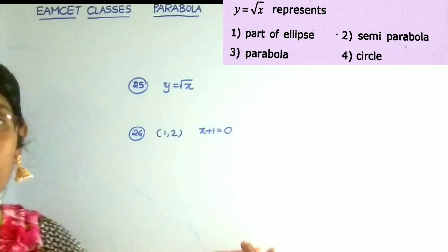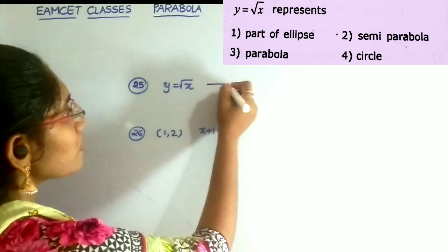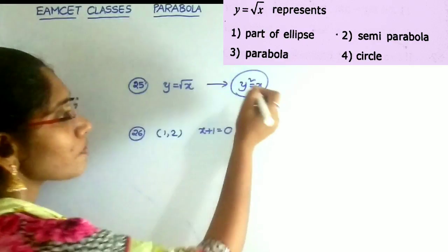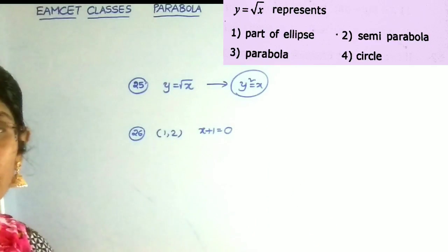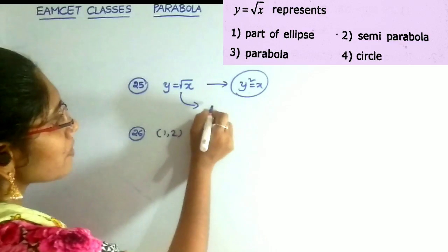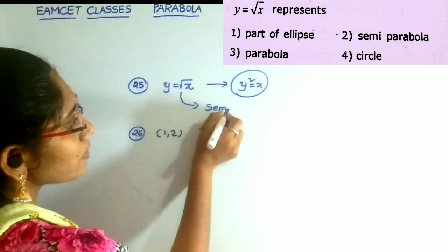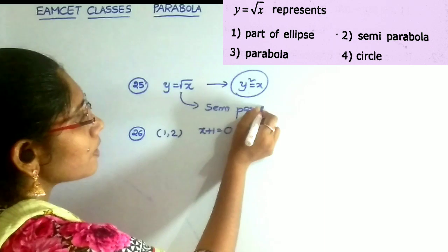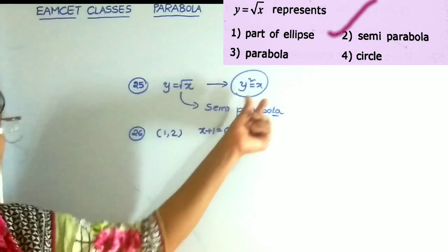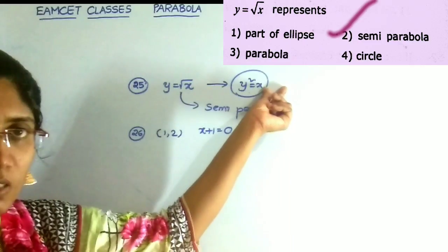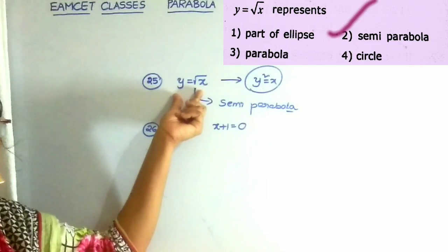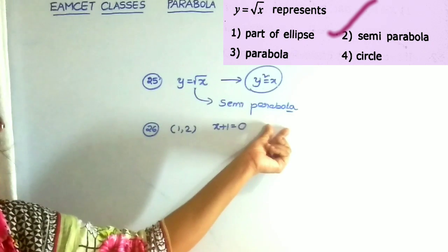The next question: the equation y equals root x represents what? After squaring both sides, y squared equals x, which is the equation of a parabola. But y equals root x represents only a semi-parabola, not the complete parabola. So the answer is the second option — it represents only a semi-parabola.